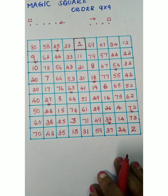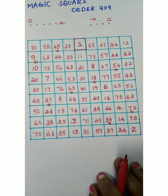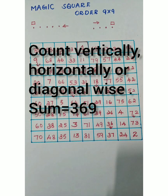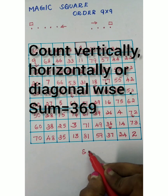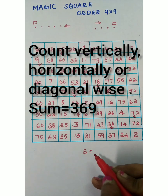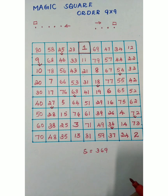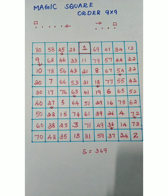The 9×9 magic square is now complete with all 81 boxes filled. Count row-wise, column-wise, or diagonally — you will get the sum equal to 369. Thank you for watching my video. Please subscribe, share, and give your comments. Have a nice day!